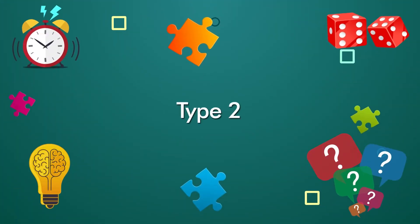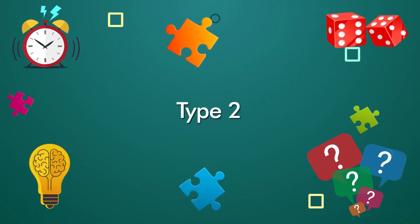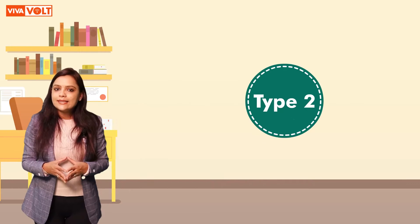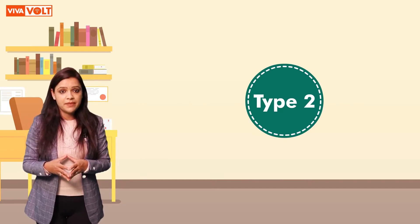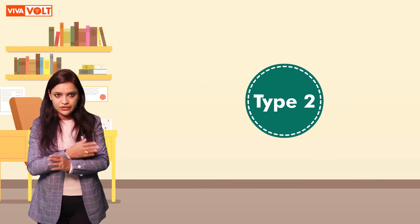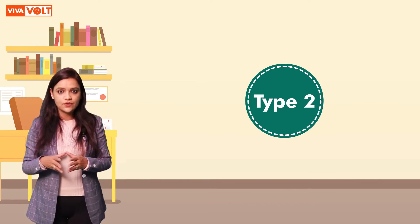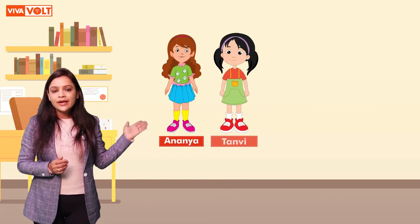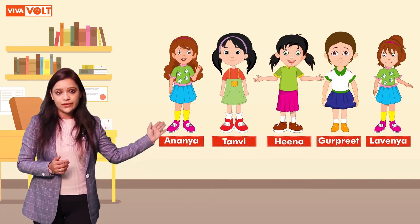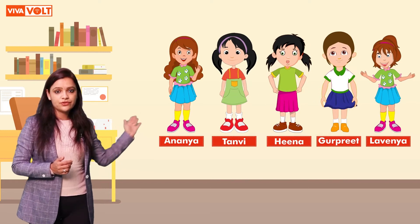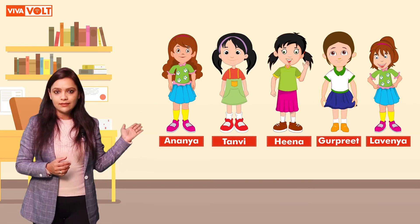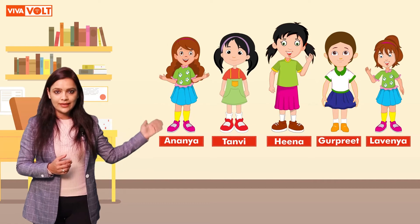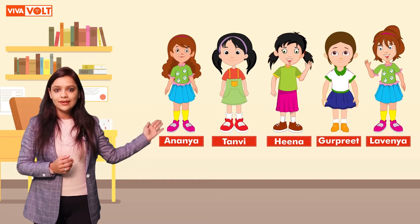Type 2. In this type of question, we need to answer questions based on interchanging the positions of two objects or persons. Look at the given row of girls ranked from left to right: Ananya, Tanvi, Henar, Gurpreet, Lavanya.